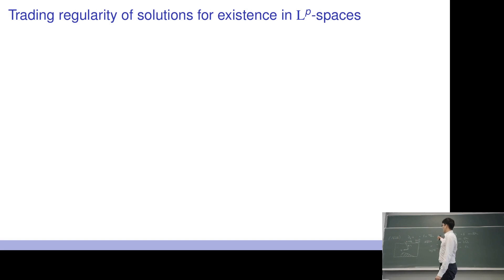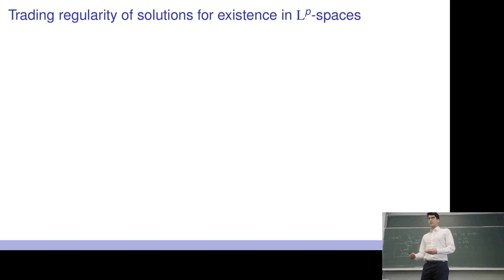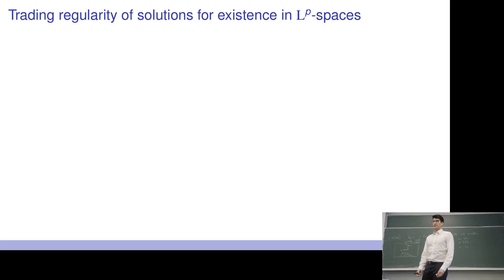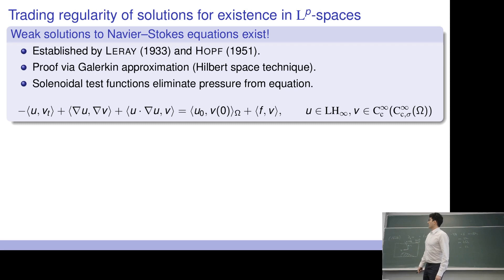Now the last 'why': about regularity. We have a differential equation and are looking for a way to solve it. It may not be possible to find a classical solution right away, so it's natural to weaken the space or assumptions. Therefore Banach spaces come into play. This was done some time ago by Leray and Hopf, who found via a Galerkin approximation — a Hilbert space technique, so in the L2 setting — a solution to the system of equations.